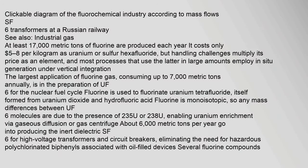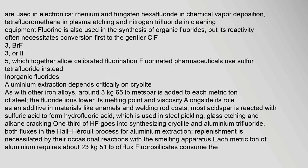At least 17,000 tonnes of fluorine are used in electronics: rhenium and tungsten hexafluoride in chemical vapor deposition, tetrafluoromethane in plasma etching, and nitrogen trifluoride in cleaning equipment. Fluorine is also used in the synthesis of organic fluorides, but its reactivity often necessitates conversion first to the gentler ClF₃, BrF₃, or IF₅, which together allow calibrated fluorination. Fluorinated pharmaceuticals use sulfur tetrafluoride instead.